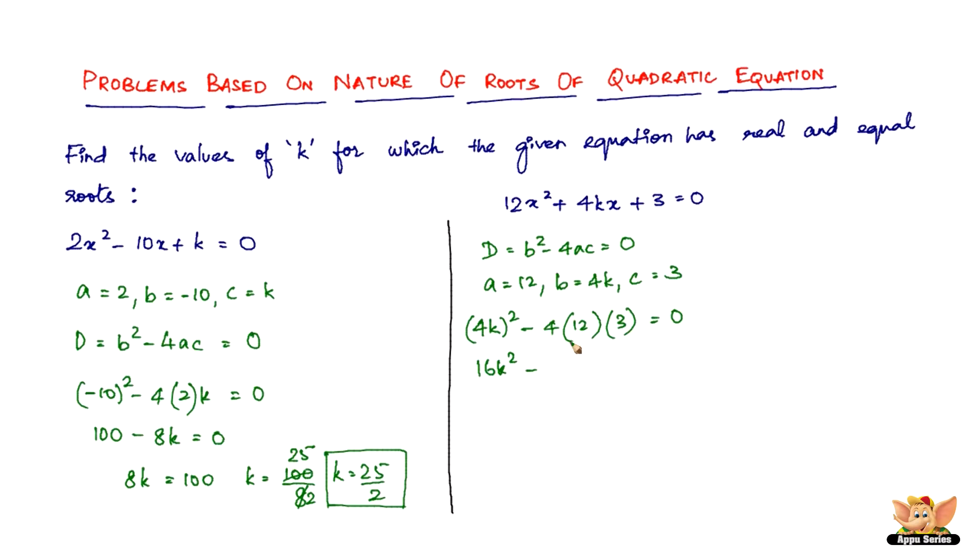Or 16k² equals 144, or k² equals 144 by 16, which is 16 goes 9 times in 144. So we've got k² equals 9, so we've got k equals ±√9. Therefore, k equals +3 or -3.